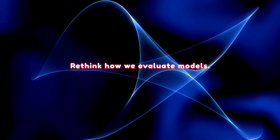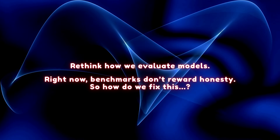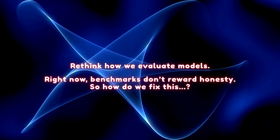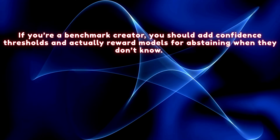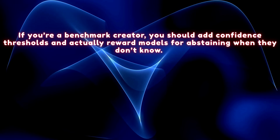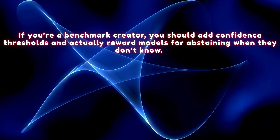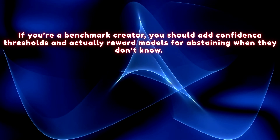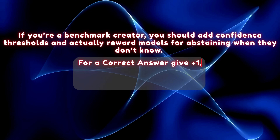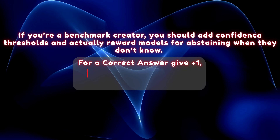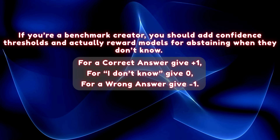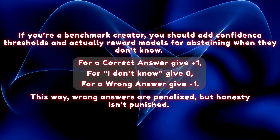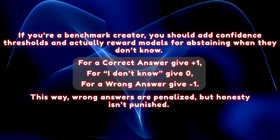How to fix this? Rethink how we evaluate models. Right now, benchmarks don't reward honesty. If you're a benchmark creator, you should add confidence thresholds and actually reward models for abstaining when they don't know. Here's one simple scoring system: for a correct answer, give plus one. For 'I don't know,' give zero. And minus one for a wrong answer. This way, wrong answers are penalized, but honesty isn't punished.